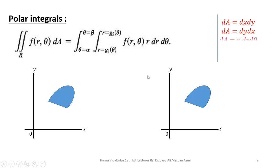Please note that in the Cartesian system, we were used to dA = dx dy or dy dx. But in the polar coordinate system, we use dA = r dr dθ. That is why I have replaced dA with r dr dθ.